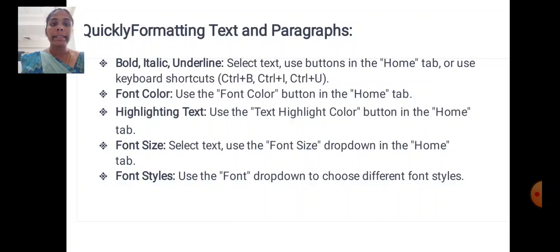Quickly formatting text and paragraph. Bold, italic, underline: select text, use buttons in the home tab or use keyboard shortcuts Ctrl B, Ctrl I, Ctrl U. Font colors: use the font color button in the home tab. Highlighting text: use the text highlight color button in the home tab. Font size: select text, use the font size drop down in the home tab. Font styles: use the font drop down to choose different font styles.